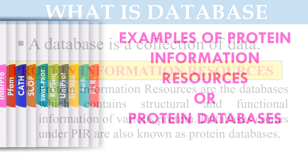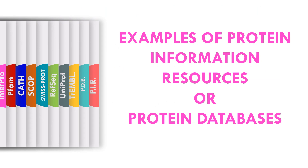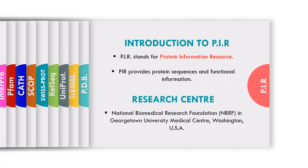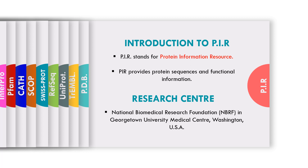Here are certain examples of protein databases or protein information resources. The first one is PIR, that is Protein Information Resource. PIR provides protein sequence and functional information of various species. Its research center is at the National Biomedical Research Foundation, that is NBRF, in Georgetown University Medical Center, Washington, USA.